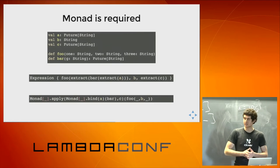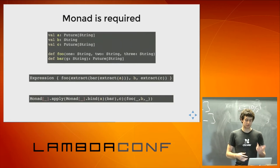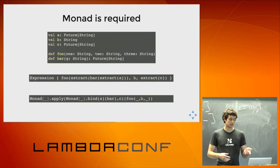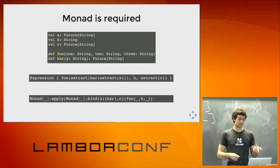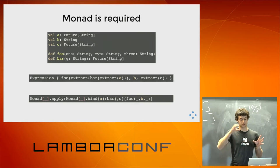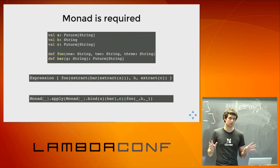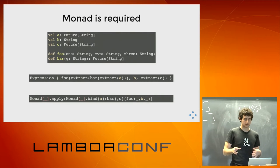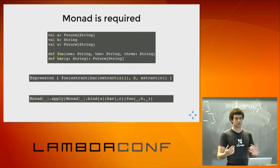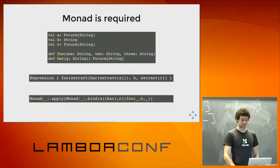Here's another example where Monad is required. We have a foo function operating over strings, and a bar function that operates over a string and returns a Future of String. So we end up having to extract A to pass it to bar, and then extract again the result of bar to pass to foo. There's no way you can do this with Apply alone. In this case the notation is smart enough to detect that it needs to use Monad, and it's going to use bind to implement this.